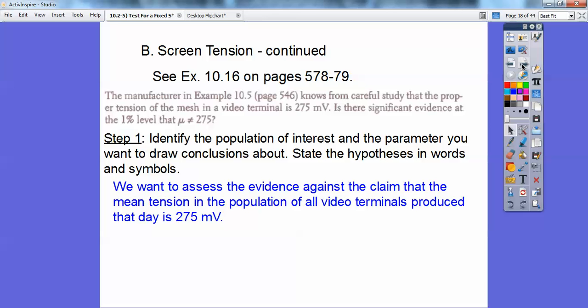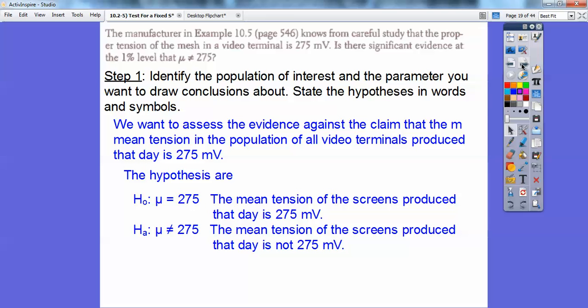So we want to assess the evidence against the claim that the mean tension of the population of all terminals produced that day is 275. So we're going to then state the hypotheses, and I just scrolled up so I had a little bit more room. The hypotheses are that the population μ does equal that 275, that the mean tension of the screens produced that day is 275. Remember, it's no change. It's always your null hypothesis. The alternative hypothesis, they just want to know, does it not equal, so does it not equal 275? So the mean tension of the screens produced that day is not 275 millivolts.